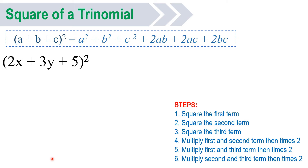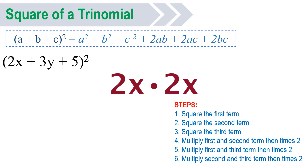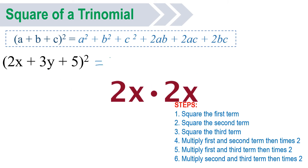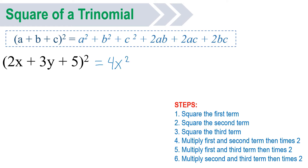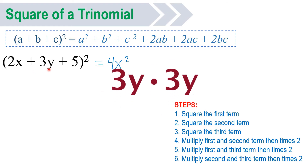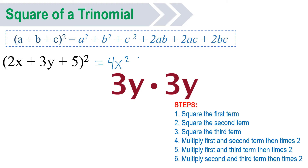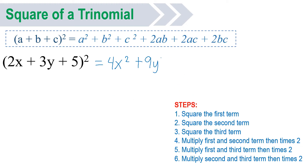Let's see this in our example. We have 2x plus 3y plus 5, so this is a square of a trinomial. First step: square the first term. The first term is 2x. So when you square this, 2x times 2x, you will have an answer of 4x squared. Then for the second step, square the second term. We have 3y. 3y times 3y, it will become positive 9y squared.